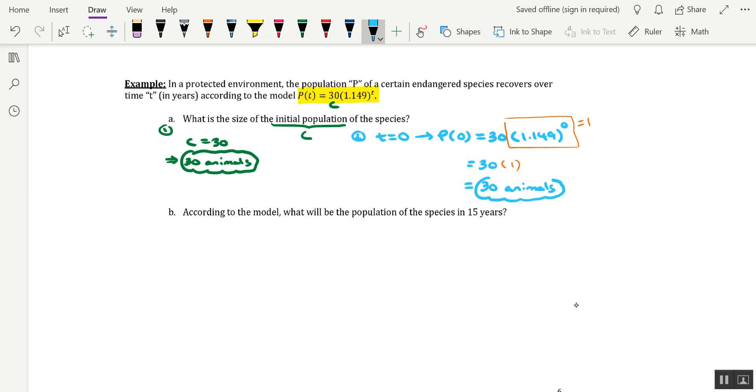So either way you do it, we do end up with the same answer. For part B, it says, according to the model, what will be the population of the species in 15 years?